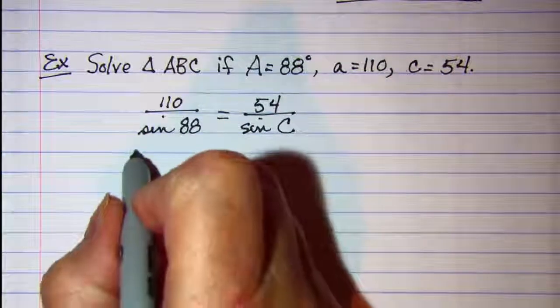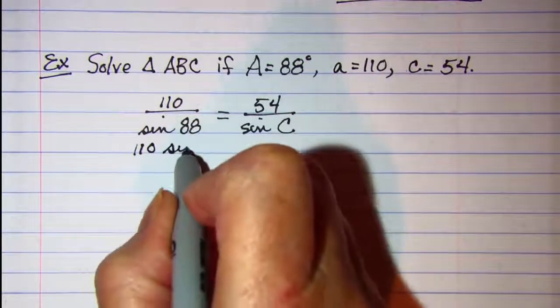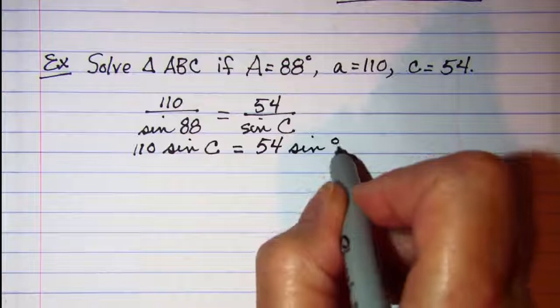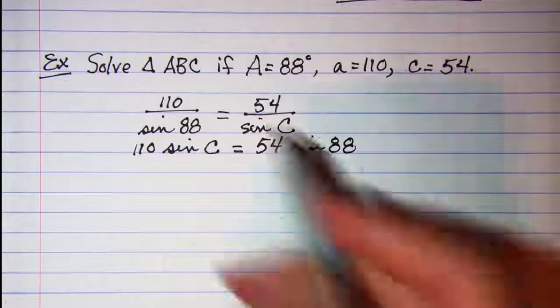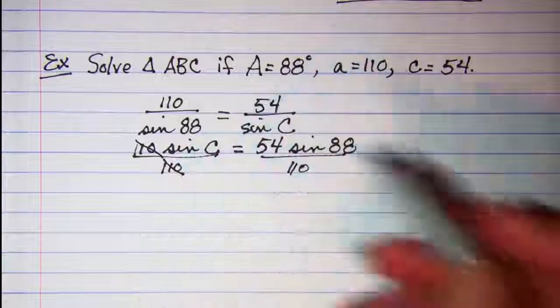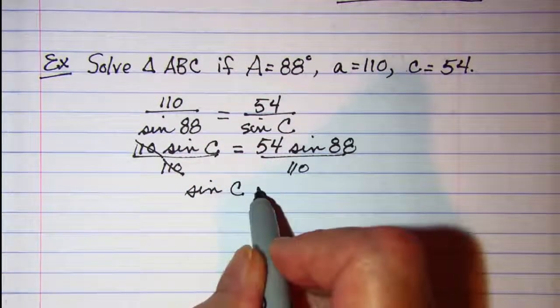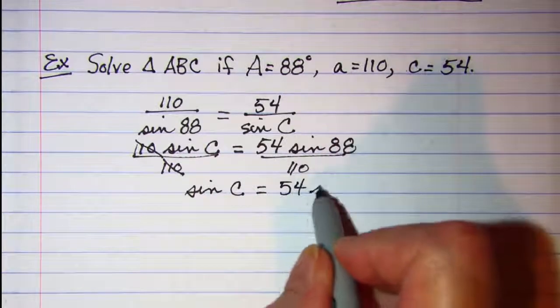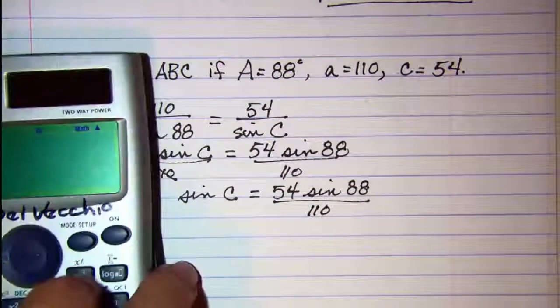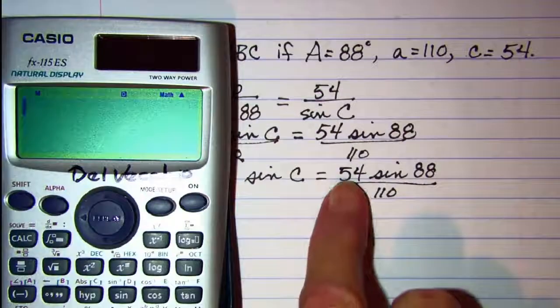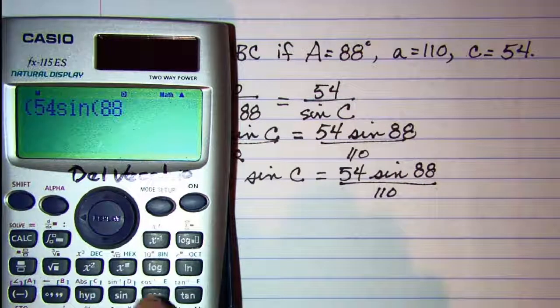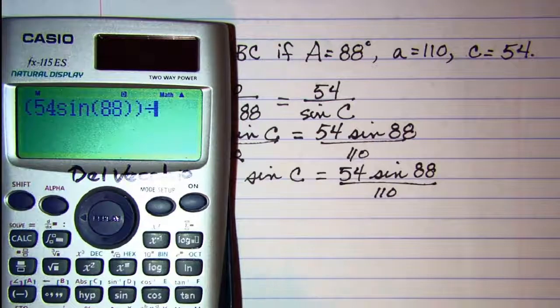Do our cross multiplication, so 110 times the sine of C is equal to 54 times the sine of 88. Divide both sides by 110. These will cancel. Now sine of C is equal to 54 times the sine of 88 divided by 110. So 54, let's open our numerator, 54 times the sine of 88. Close the argument and close the numerator divided by 110.